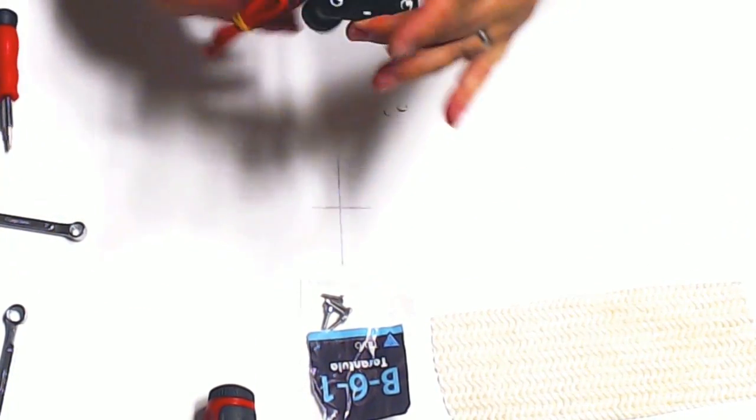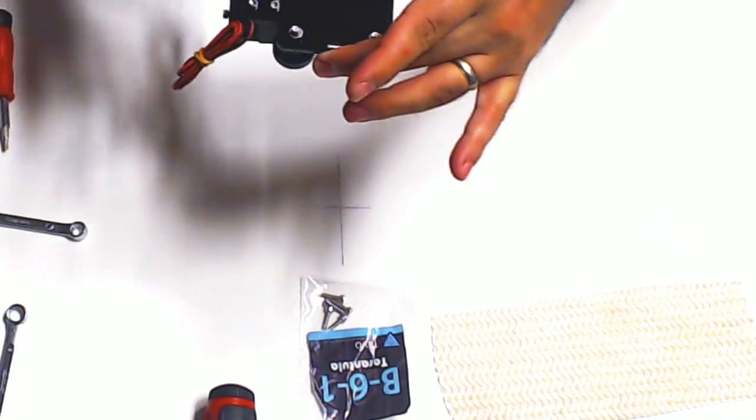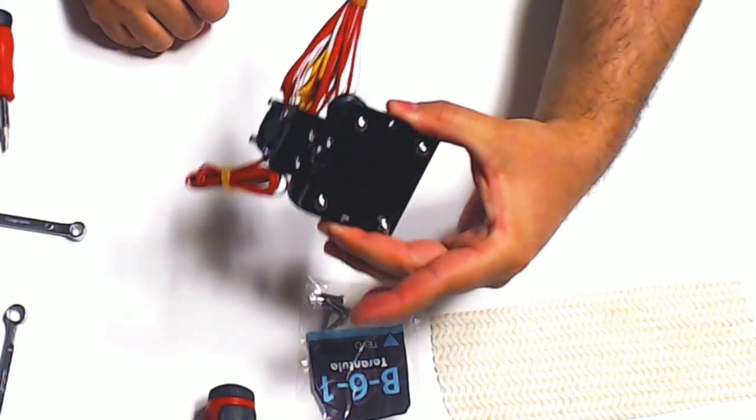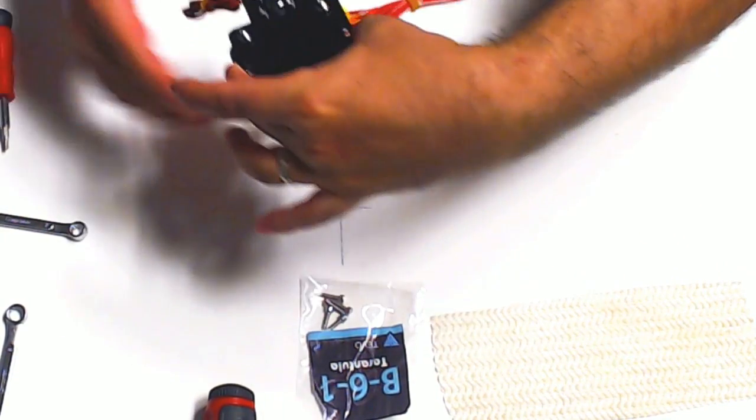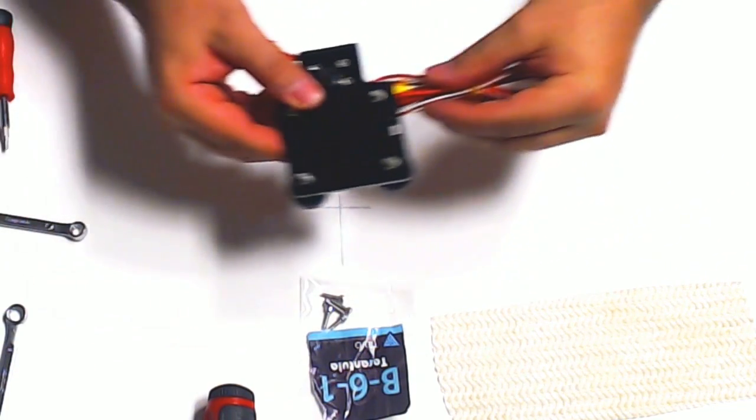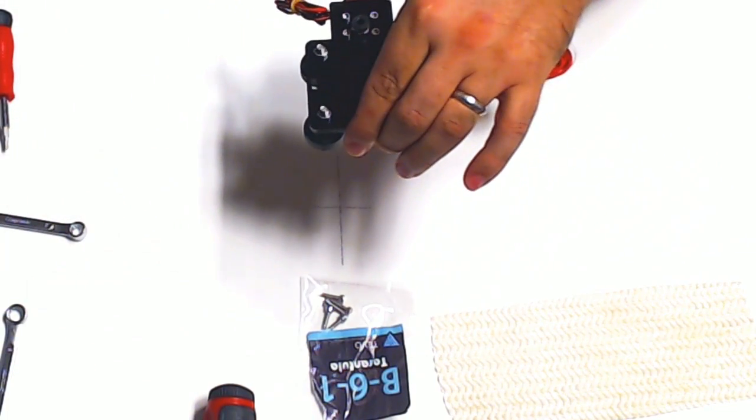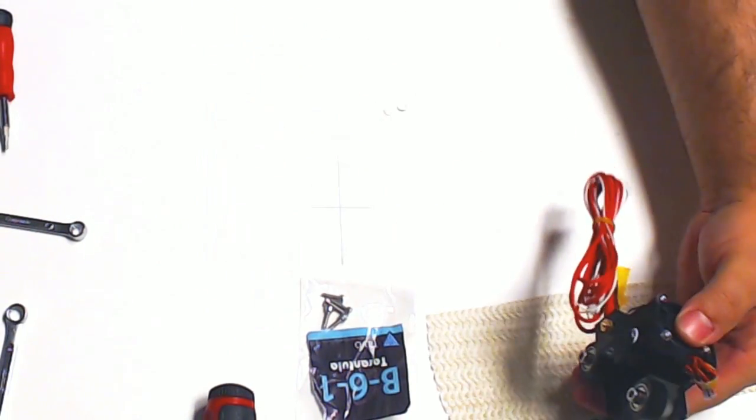And there we go. There is our hot end and our X carriage ready to mount and roll back and forth. All right, and we'll move on to the next step.